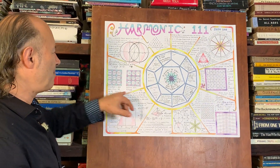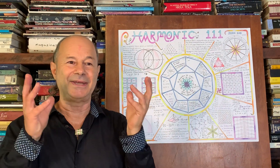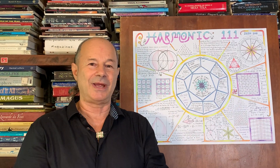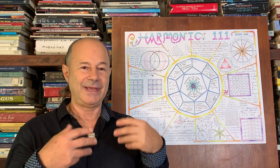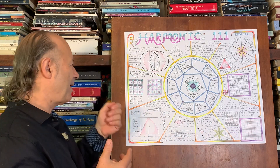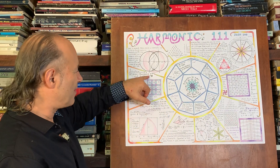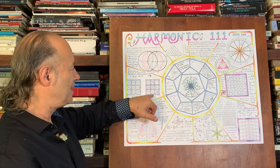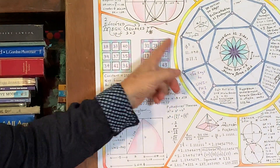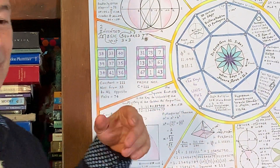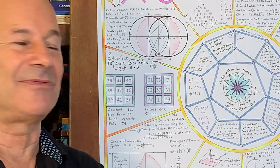A lot of people are interested in prime numbers. The question is: can we make another magic square of three by three where all nine numbers add up to 111 — the three columns, the three rows, and the two diagonals? Prime numbers are considered to be what they call the atoms of creation.